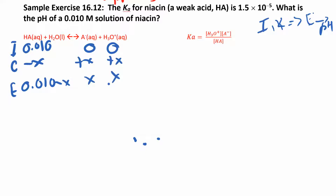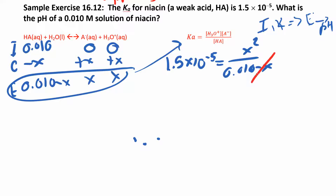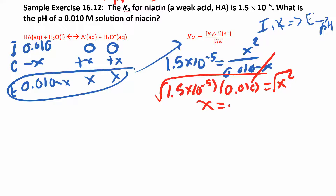We're looking for the pH, so we need the equilibrium concentrations. We take the bottom row and plug it into our Ka expression. Ka is 1.5×10⁻⁵, which equals X² over (0.10 minus X). Since Ka is times 10 to the negative 5, that's pretty small, so we can probably approximate and drop the minus X. We'll approximate and then check. So 1.5×10⁻⁵ times 0.10 equals X squared. Taking the square root of both sides gives X = 3.87×10⁻⁴.